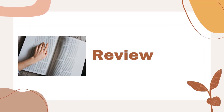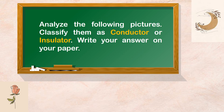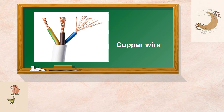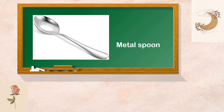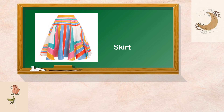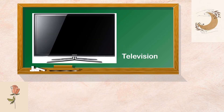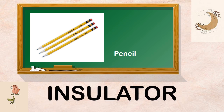To start with, let us have a short review of our previous lesson. Analyze the following pictures and classify them as conductor or insulator. Write your answer on your paper. Copper wire — Conductor. Metal spoon — Conductor. Skirt — Insulator. Television — Conductor. Pencil — Insulator.